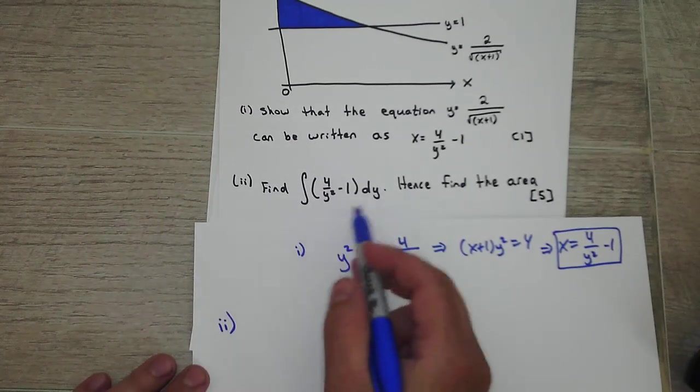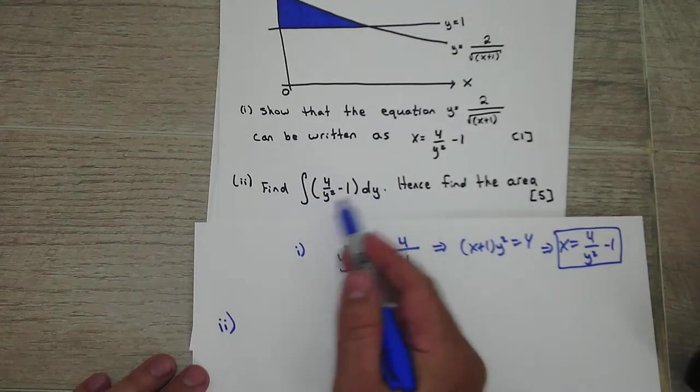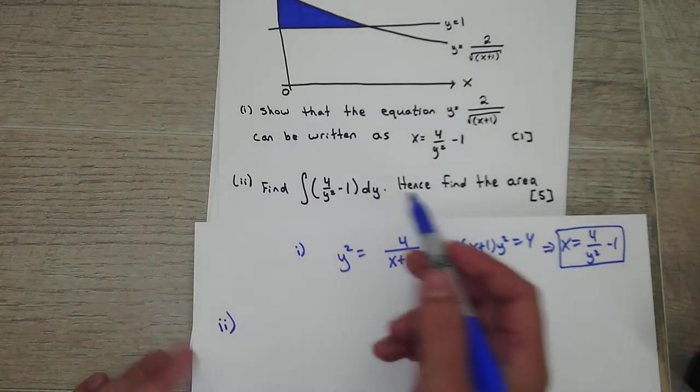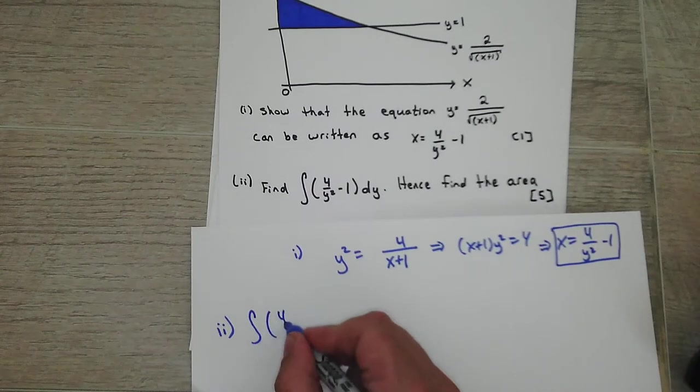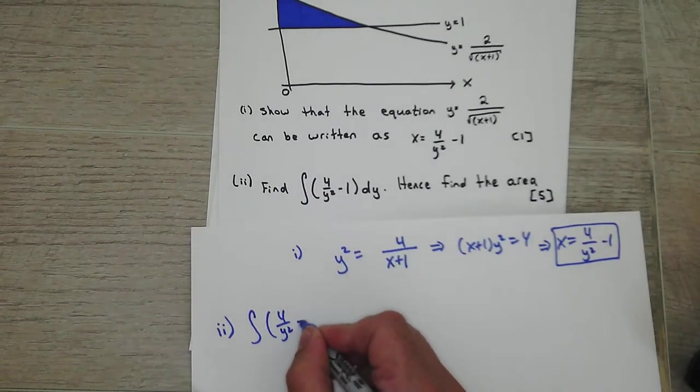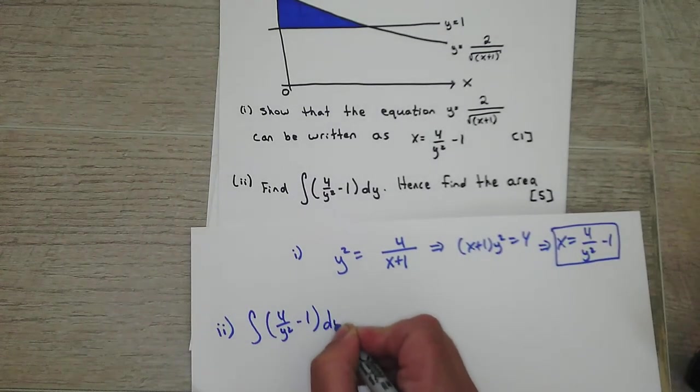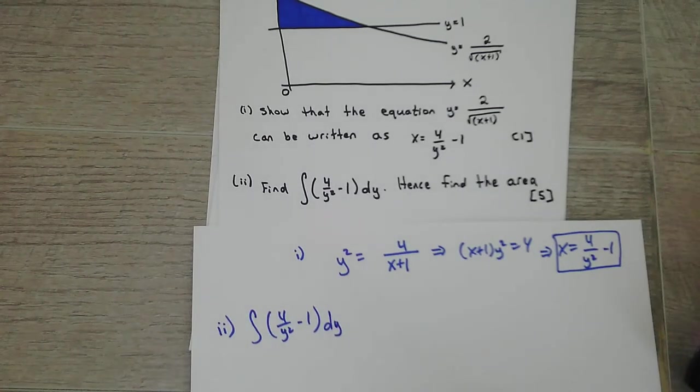Okay, so the only thing that's different is we're dealing with y variables instead of x variables. But it's still the same thing. So we have the integration of 4 over y squared minus 1 dy. Find the area. So we need to find our limits.